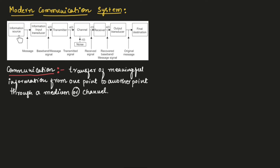If we consider the communication system, it consists of an information source, information or input transducer, transmitter, channel, receiver, output transducer, and the final destination where the message has to be sent.